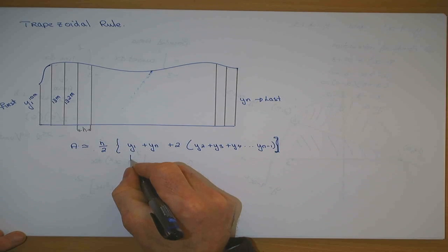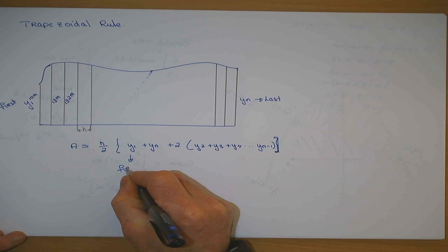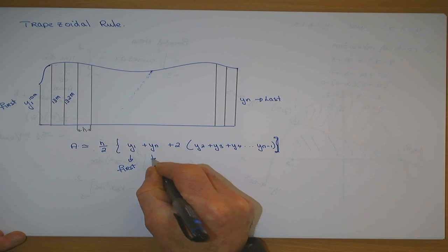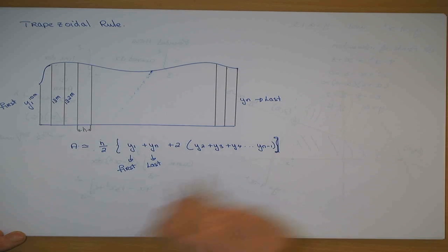But in this formula, you have to take out the first one, and you must take out the last one. And it's twice the rest of them added together. And that formula will give you the area under that curve, it is known as the trapezoidal rule.